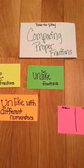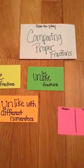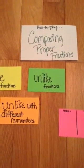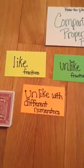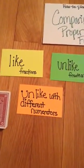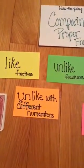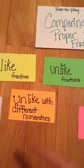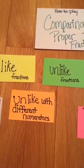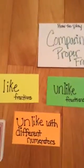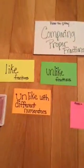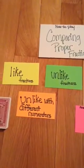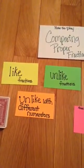Unlike fractions are fractions that have different denominators but the same numerators. Unlike fractions with different numerators just have none of the same numbers. But they're all proper fractions, so the lesser number is in the numerator and the greater number is in the denominator.